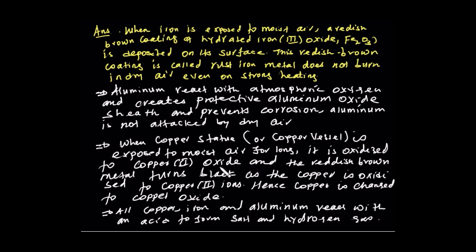Copper exposed to moist air for a long time is oxidized to copper oxide. The reddish-brown copper metal turns black as it is oxidized to copper(II) oxide.